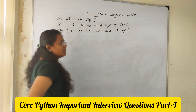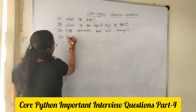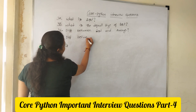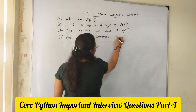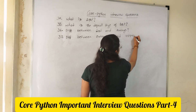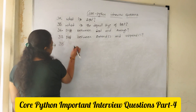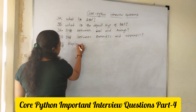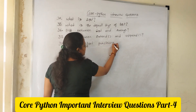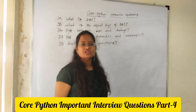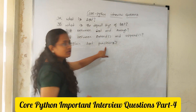Question 37: Differentiate between extend and append methods — the difference between extend and append methods. Question 38: Explain list functions. A list has methods and functions. In functions, you have minimum, maximum, and length — you need to discuss all three functions.